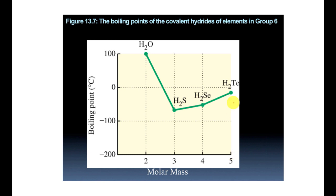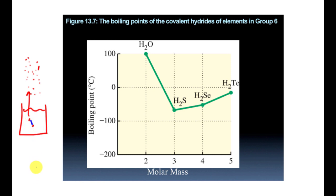We can use boiling points as a measure of intermolecular force strength. Looking at these four compounds, boiling point is the point where a liquid goes into the gas phase. In order to get that gas to come out, we need to break the bonds that are holding the molecules together — the intermolecular force. If I break that intermolecular force, then that gas particle can go off into the gas phase. So the stronger the intermolecular force, the higher the boiling point. These four compounds are all polar, so they all have dipole-dipole attractions, but look at the energy differences.